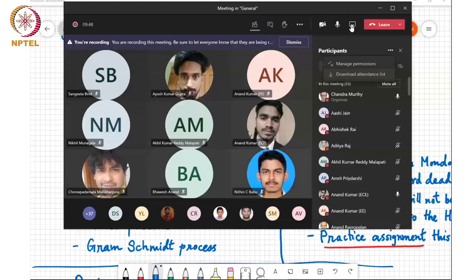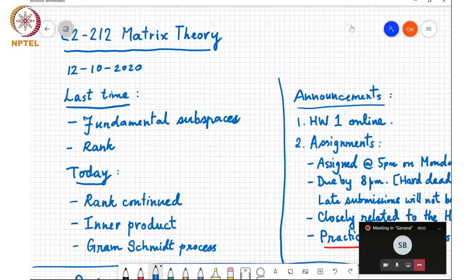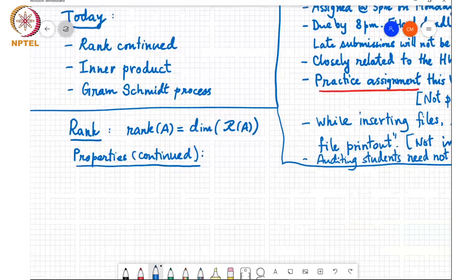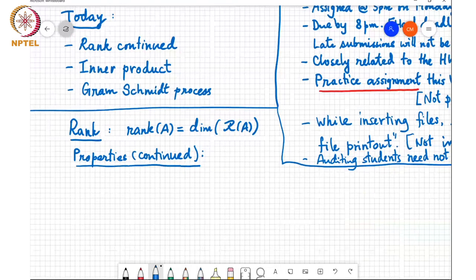Okay, so we will begin. So the last time we looked at fundamental subspaces and we started discussing the rank. Today we will finish the discussion about the rank of a matrix and then move on to the inner product and the Gram-Schmidt orthogonalization process. Okay, so let's continue. So we were talking about the rank.